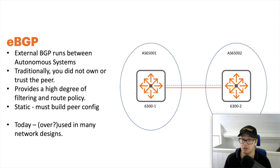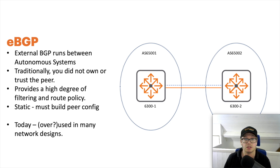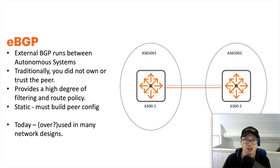In the past BGP was very much the domain of service provider network engineers, but nowadays there's a proliferation of use cases. BGP has moved into the data center with Spine and Leaf designs, and now into the campus as well. That said, it's a bit controversial in networking circles because there can be an over-reliance — if you see a Spine and Leaf design, don't immediately assume you need BGP; OSPF may work just fine.